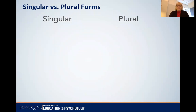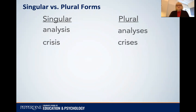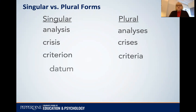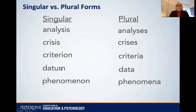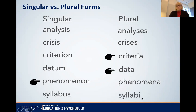Let me go through a few singular and plural forms and then we'll practice. The first two are 'analysis' and 'crisis' — in the singular they end in IS, and the plural changes to ES. Then we have three others that all end in A in the plural form: criteria, data, phenomena — where the singular ends in either ON or UM. And the last one is 'syllabus,' which ends in US, and the plural ends in I.